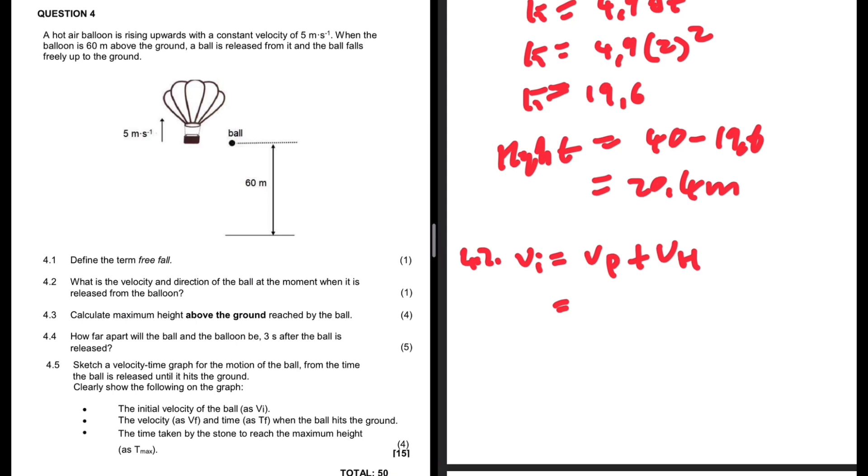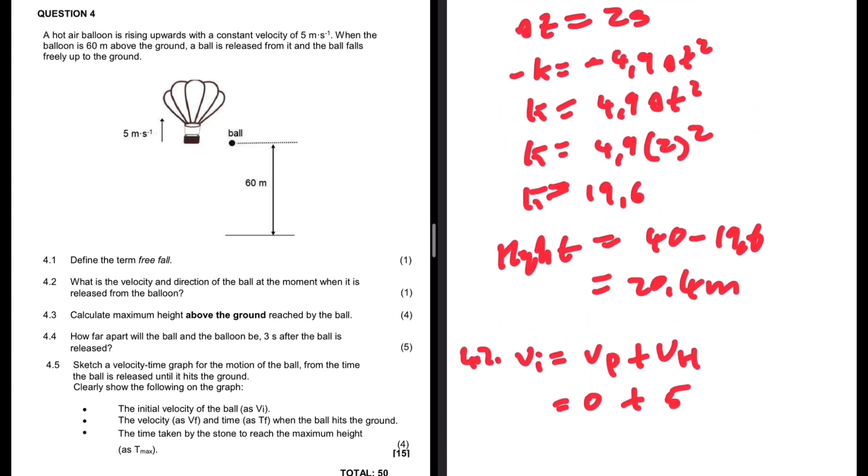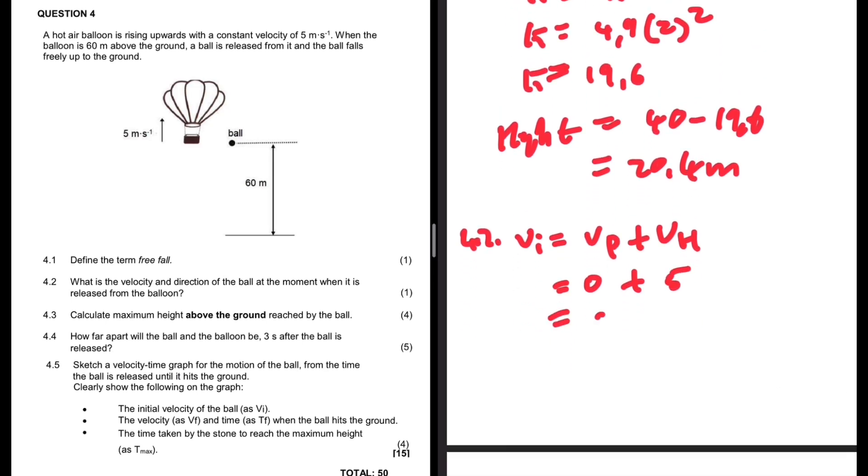The ball is released, so the velocity at which it is projected is zero. The velocity of the hot air balloon is 5 meters per second. Taking up as positive, we have 5 meters per second. That is the initial velocity of the ball after it is released from the balloon.